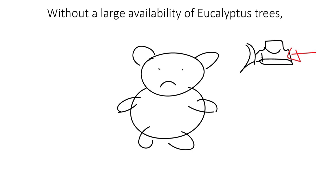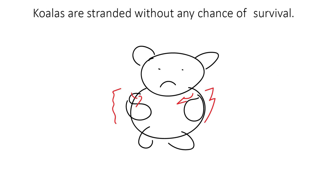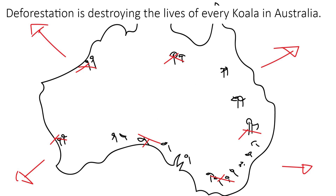Without a large availability of eucalyptus trees, koalas are stranded without any chance of survival. Deforestation is destroying the lives of every koala in Australia.